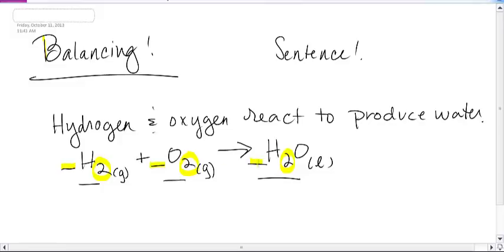So we need a number in front or numbers in front to balance it. I know you guys have balanced this one in middle school. So I've got two hydrogens over here and two over here, so I'm pretty good there. But I've got two oxygens over here, so I need two oxygens in water. So I am going to put a two in front of it. So it must be balanced now, right?